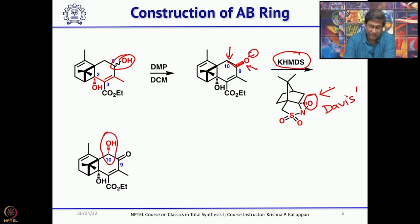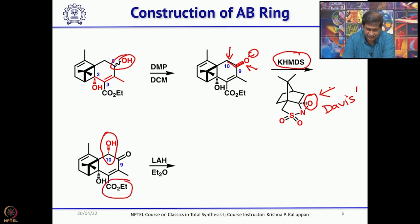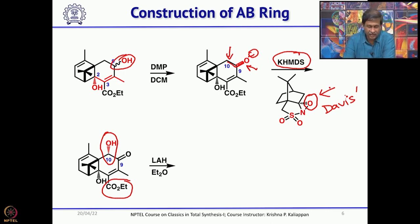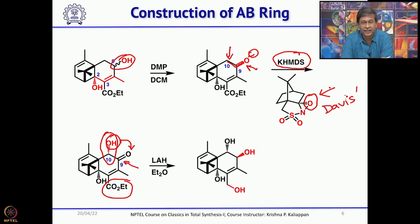You could selectively introduce the alpha-hydroxyl at this carbon. The stereochemistry can be addressed at the later stage — beta is needed, but that can be done later. The idea is to introduce a hydroxyl group there first. Now you have an alpha,beta-unsaturated ketone and also an ester. If you reduce with LiAlH4, both the ester and the keto group will be reduced to a secondary alcohol and a primary alcohol, respectively. The hydride is delivered using the alpha hydroxyl as a handle from the same side, so the resultant alcohol will be beta, and the ester is also reduced to the corresponding primary alcohol.